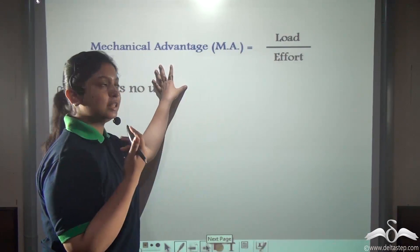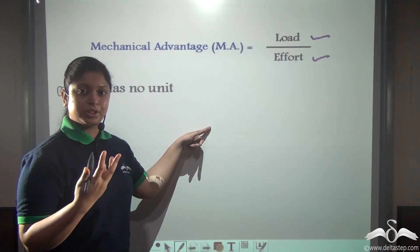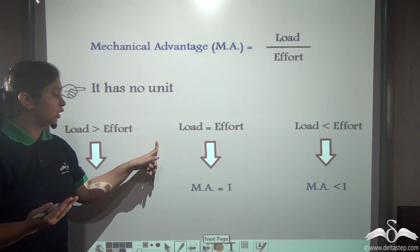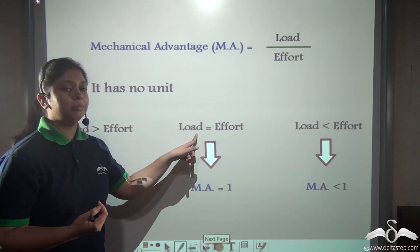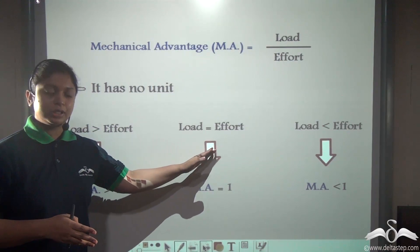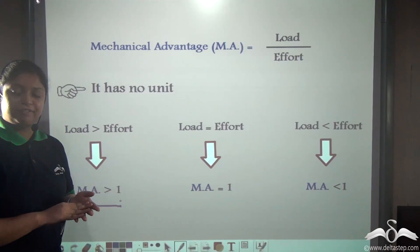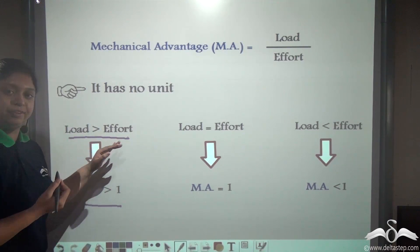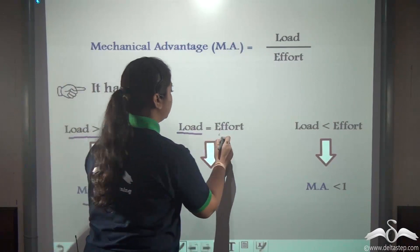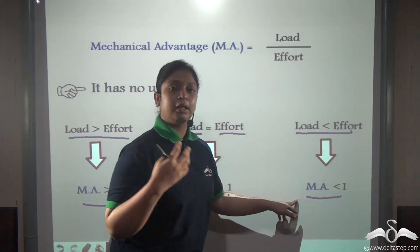Mechanical advantage is load divided by effort, and since both terms are related to force, it does not have any unit. There are three conditions: the load might be greater than effort, equal to effort, or lesser than effort. Accordingly, mechanical advantage can be greater than 1, equal to 1 (as in a seesaw), or lesser than 1.